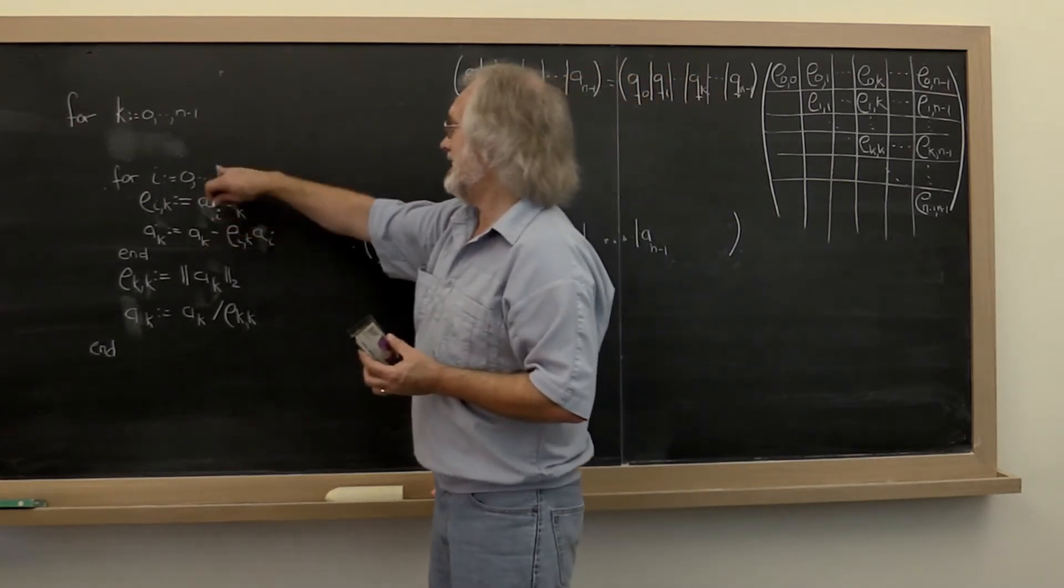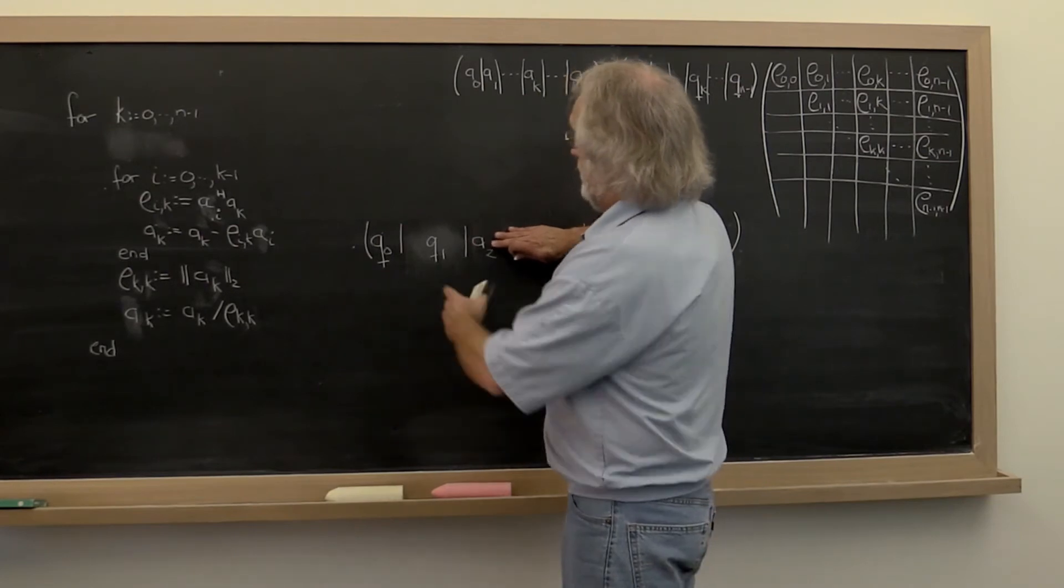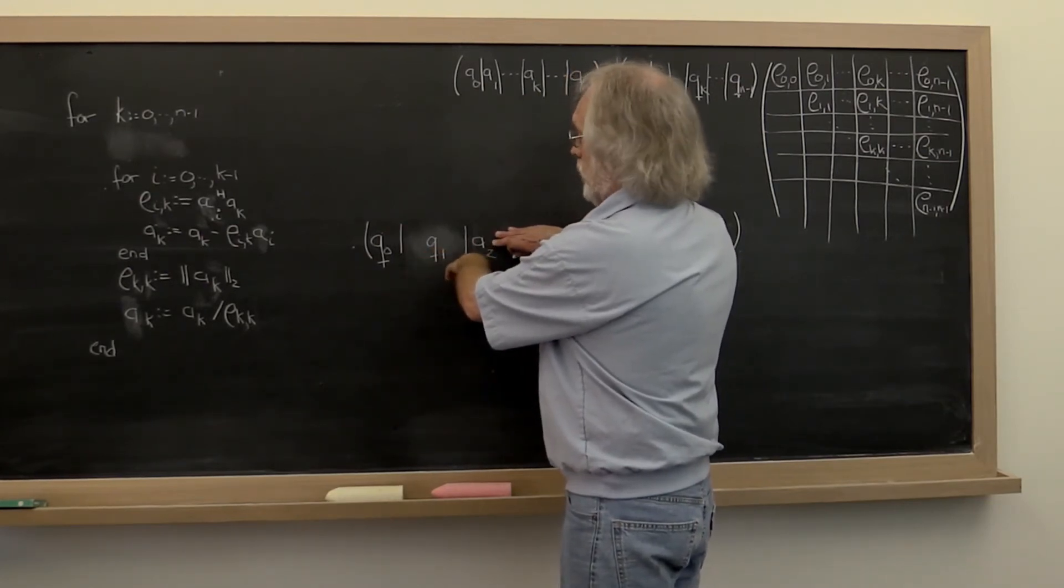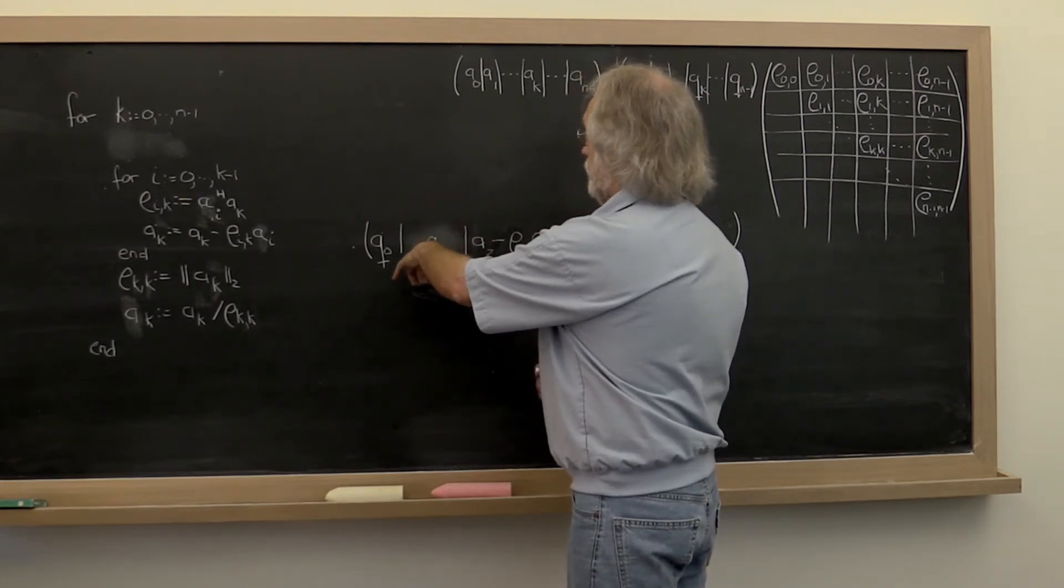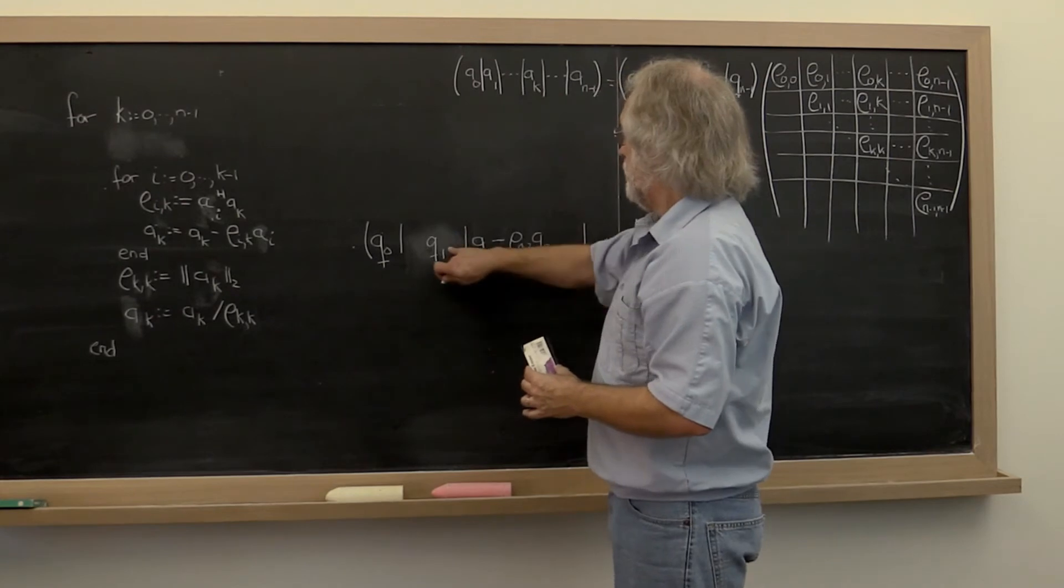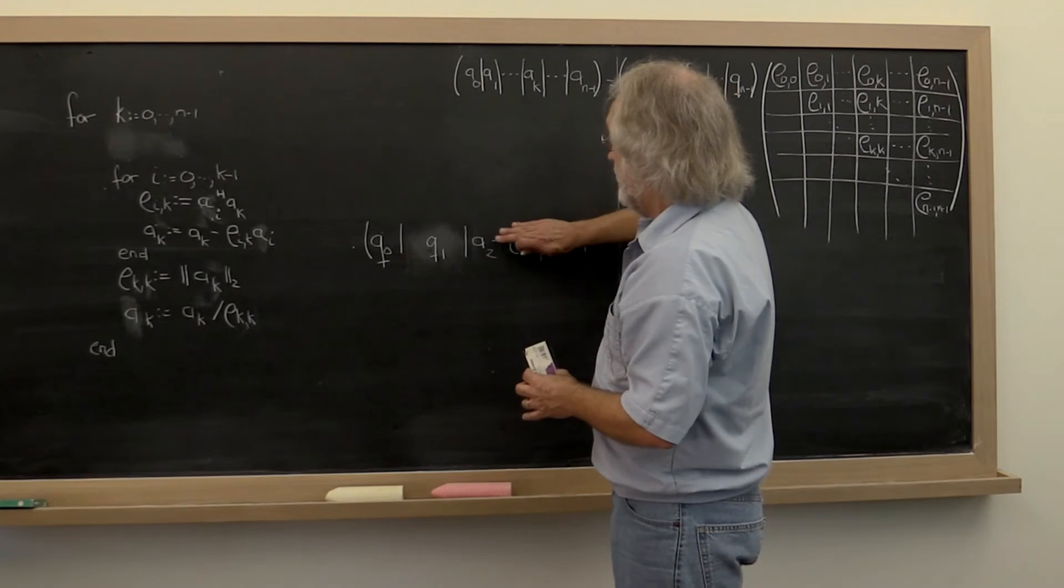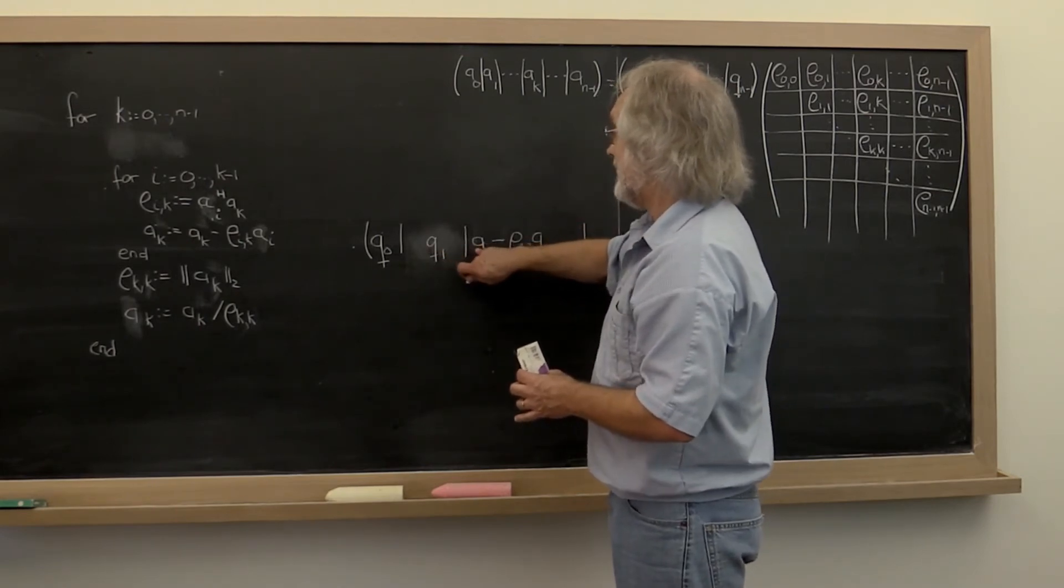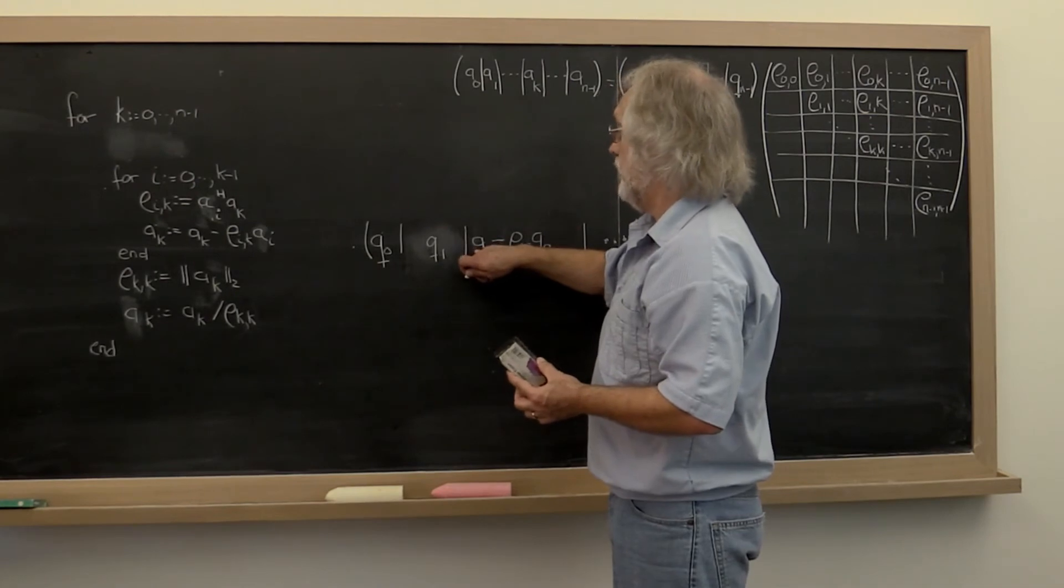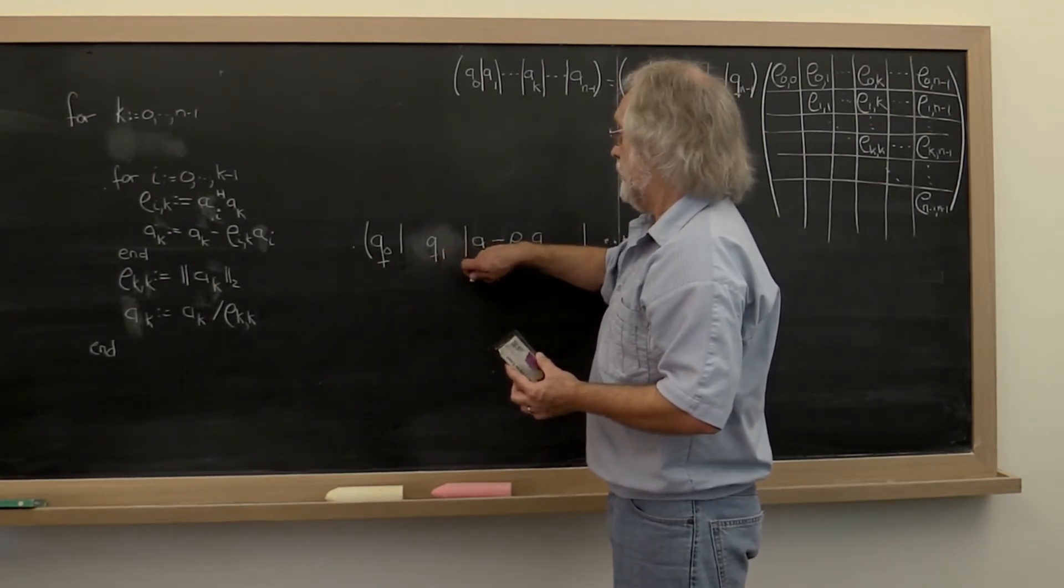But notice that in the next iteration then we don't look at the dot product of q_1 with A. We instead look at the dot product of q_1 with this updated vector here. But what you notice is that the dot product of q_1 with q_0 is zero. And therefore it actually computes the exact same value, at least in exact arithmetic, as you would have wanted, which was q_1, the dot product with A_2.